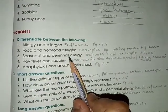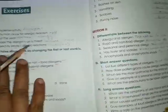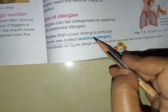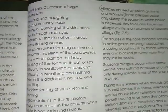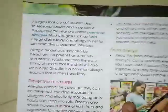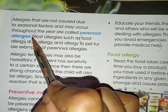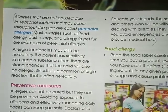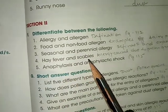For seasonal and perennial allergy, write the definition and an example. The answer is on page numbers 115 and 116. Seasonal allergies occur during a particular season — example: allergies caused by pollen grains. Perennial allergies are not caused due to seasonal factors and may occur throughout the year — example: food allergy is considered a perennial allergy.